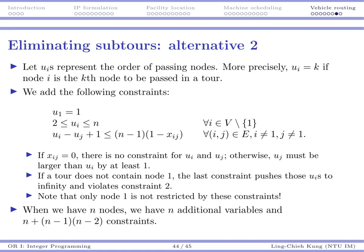Alternative two is also very clever. We are going to introduce new variables called ui. More precisely, for node i, ui is k if node i is the kth node to be visited. Pretty much our plan is that we're going to label each node: u the first one, u the second one, u the third one. And eventually, we will see how this may help us do the thing.